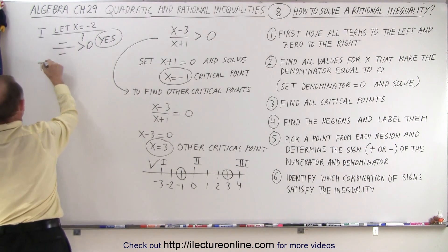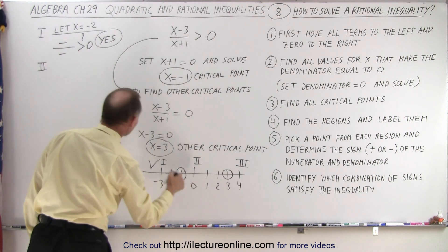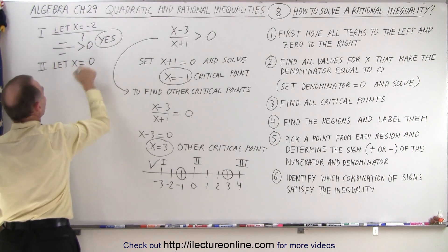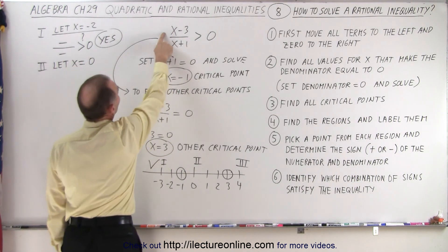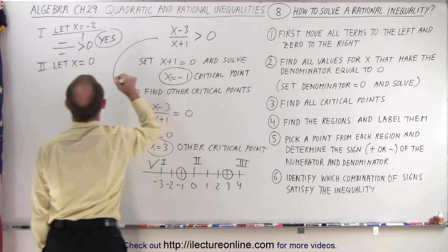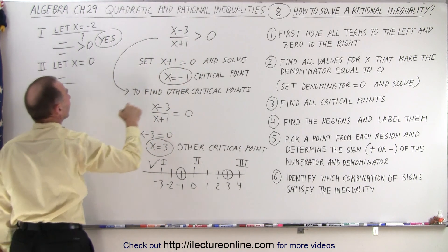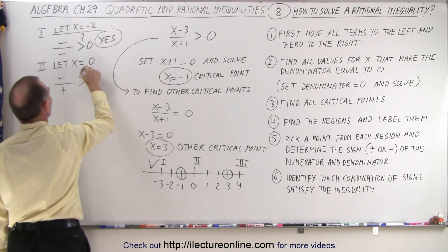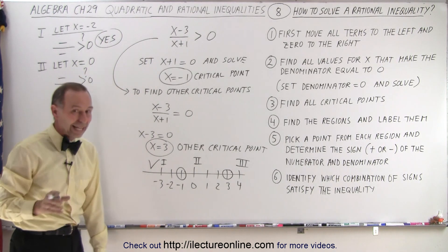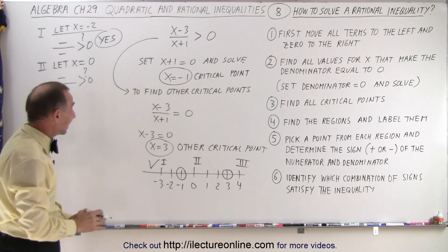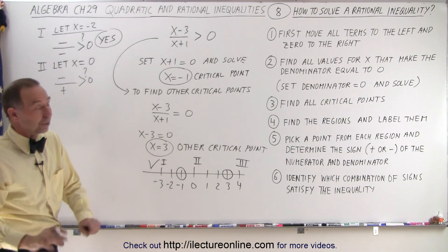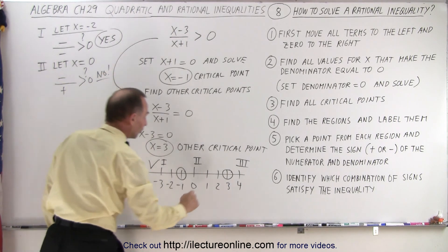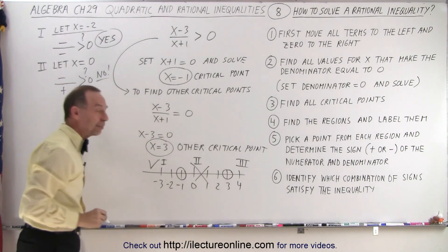How about region number two? For that, we're going to let x equal zero. If x equals zero, I have negative three in the numerator — that's a negative number — divided by positive one in the denominator. Is a negative divided by a positive greater than zero? A negative number divided by a positive number is negative — it's not greater than zero. So the answer is no, and this is not a valid region — it's not part of the solution.